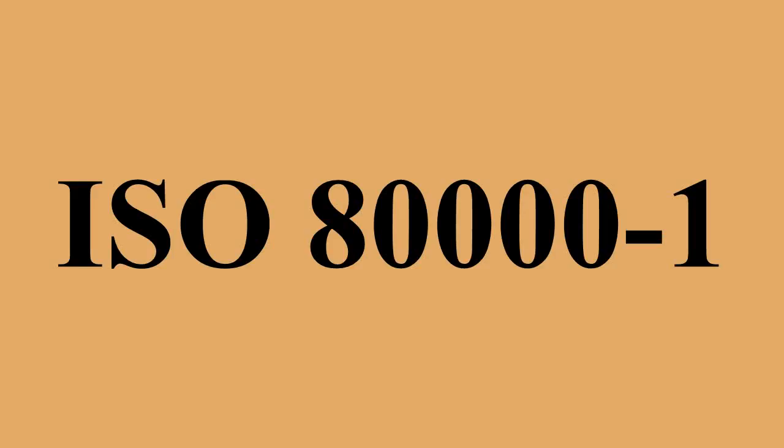A quantity in a system of quantities is defined in terms of the base quantities of that system. The International System of Quantities is a system of quantities based on the seven base quantities: length, mass, time, electric current, thermodynamic temperature, amount of substance, and luminous intensity.